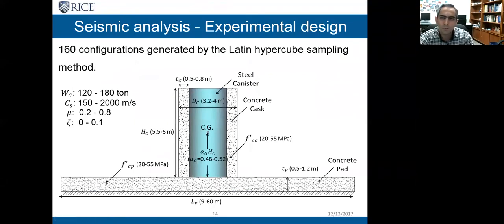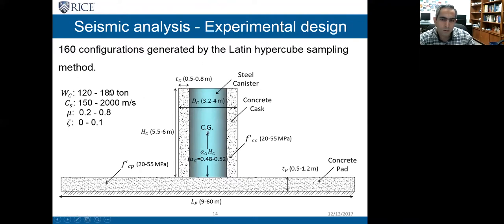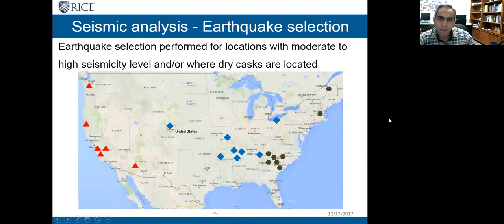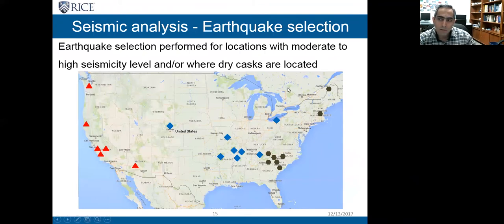By experimental design I mean a process in which we designed virtual experiments to study the problem. We are interested in the seismic response of the dry casks and considered 12 parameters — mainly geometric and material parameters, as well as the weight of the cask and the friction coefficient between the cask and its foundation. Using Latin hypercube sampling, I generated 160 configurations. I also performed earthquake selection for the west coast, central, and east coast, and analyzed the configurations subjected to those ground motion suites.